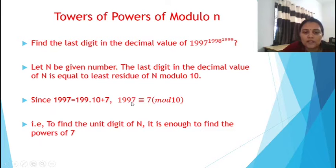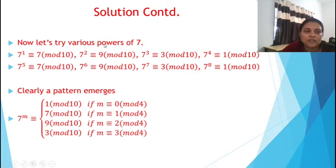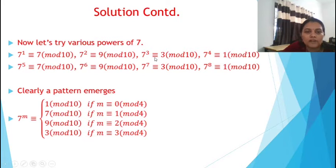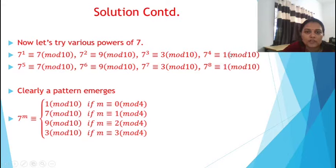Since 1997 is congruent to 7 mod 10, we try various powers of 7. 7 raised to 1 is 7, which is congruent to 7 mod 10. 7 squared is 49, which is congruent to 9 mod 10 — when we divide by 10 the remainder is 9. 7 cubed: 9 × 7 = 63, so this is 3 mod 10. 7 raised to 4: 3 × 7 = 21, so the last digit is 1, i.e., 1 mod 10.